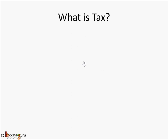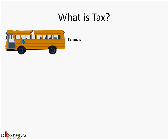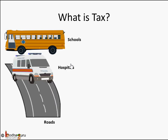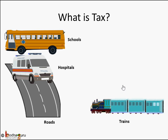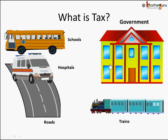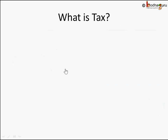We know our government builds schools, government schools, hospitals, roads, highways, and runs the train. Have you ever wondered how does the government build all these things? Where does the government get its money from to build these schools, hospitals, roads, trains, airports etc.? Government also needs money to build all these things. Government earns this money from all of us in the form of tax.